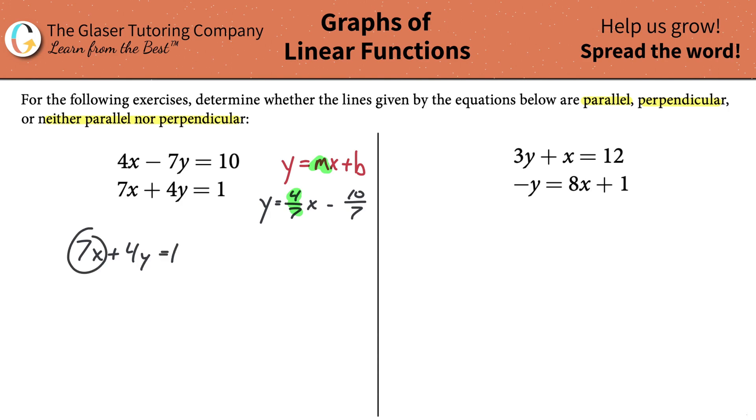Isolate y by itself. This time I'm going to move the 7x on over to the right because this is already positive. So I subtract my 7x from both sides and I realize I get 4y is then going to equal negative 7x plus 1. Why do I put this term first? Because I know my x term comes first in the equation, that's all.